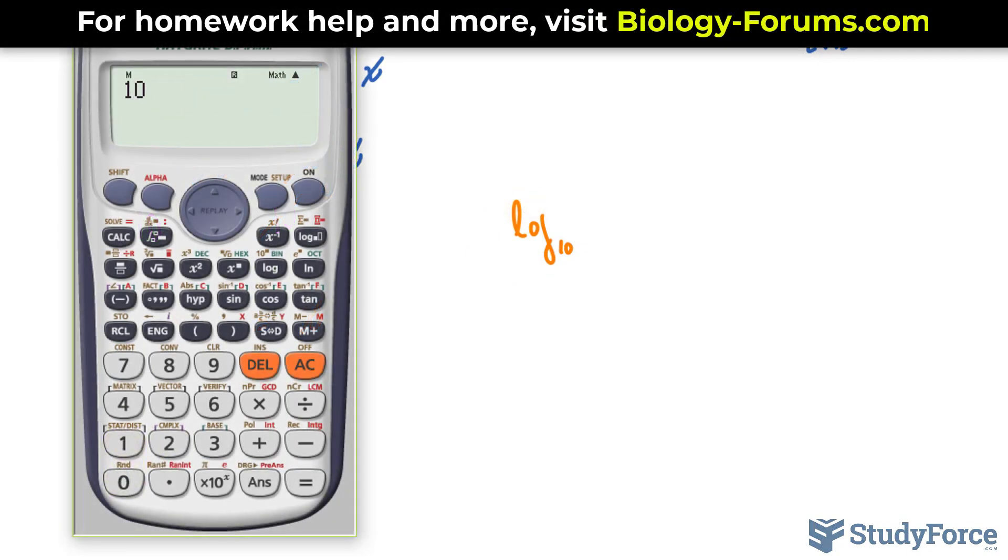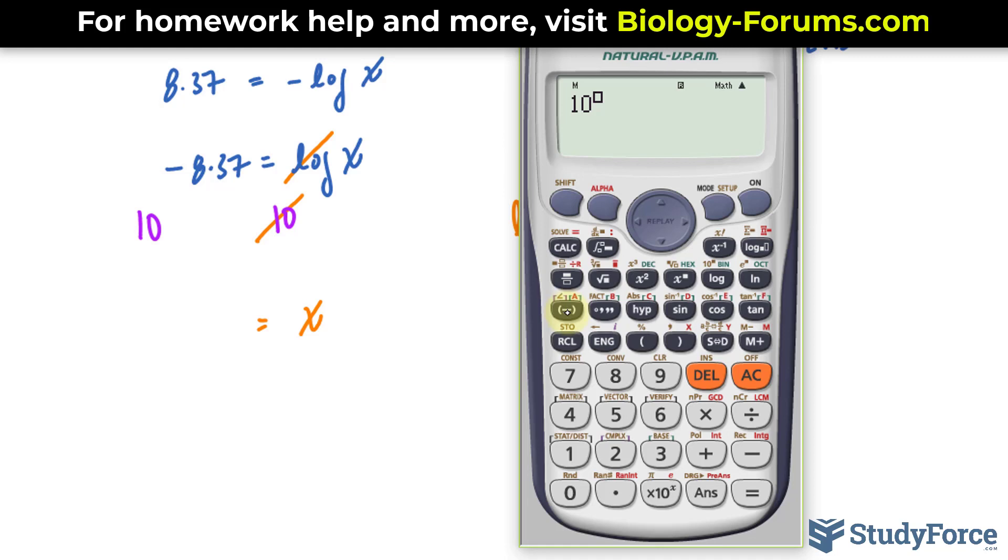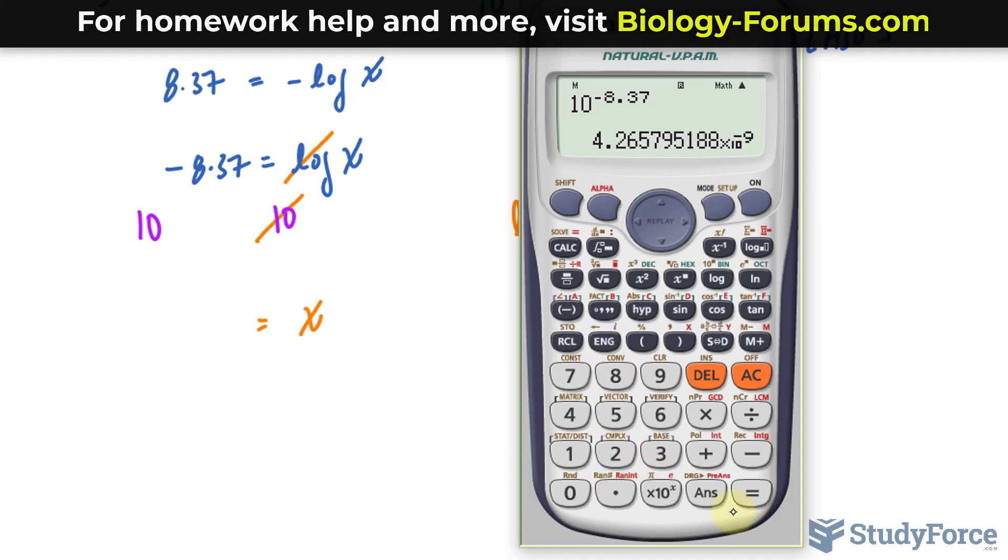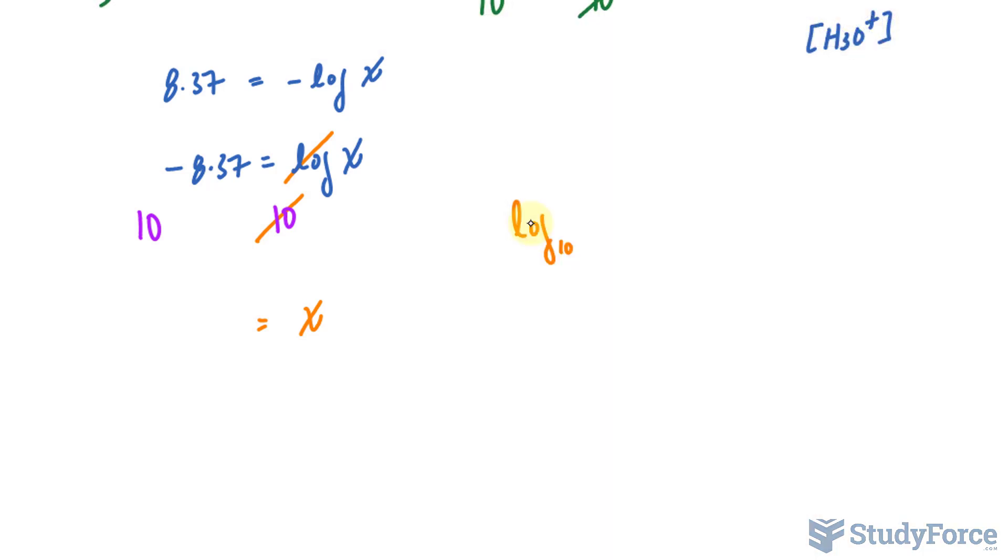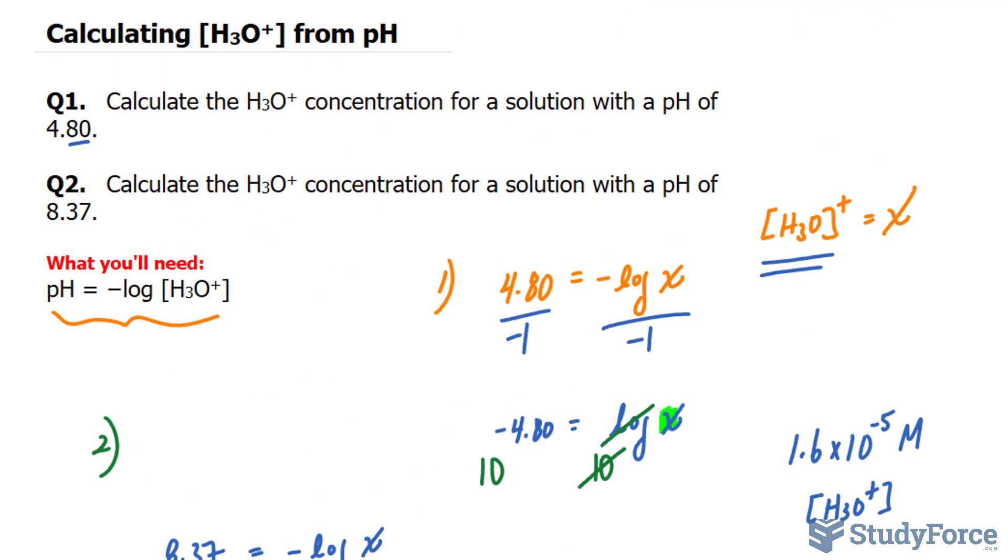10 raised to negative 8.37 gives us, and we want this to two significant figures, 4.3 times 10 raised to the power of negative 9 molar. And there you have it. That is how to calculate the hydronium concentration when given the pH.